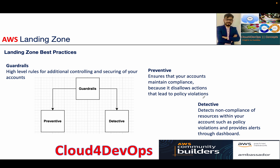The second part as part of the best practices are guardrails. These are high-level rules for additionally controlling and securing your accounts, apart from your SCPs. SCP is one level where you can control most of the stuff, and guardrails add another layer of control or security on top of your account.